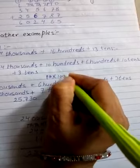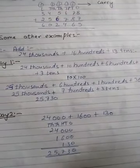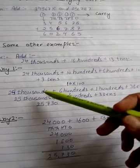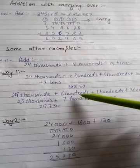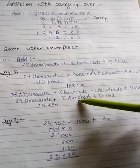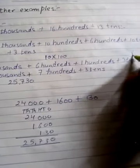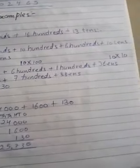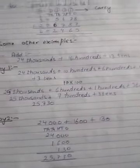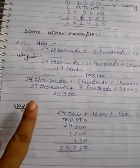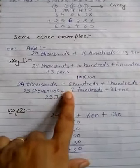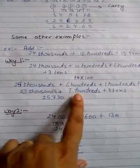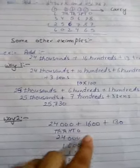So what happens is 24 thousand plus 10 hundreds. Look at one thing: 10 hundreds means 10 times 100 means 1 thousand. So 1 thousand plus 24 thousand is 25 thousand, 6 hundred plus 1 hundred is 7 hundred. Likewise, 10 tens is 1 hundred, and 3 tens. So it becomes 25 thousand 7 hundred 3 tens. Now write the number in simpler form: 25 thousand 7 hundred 30.